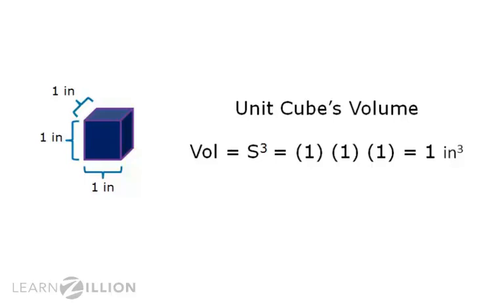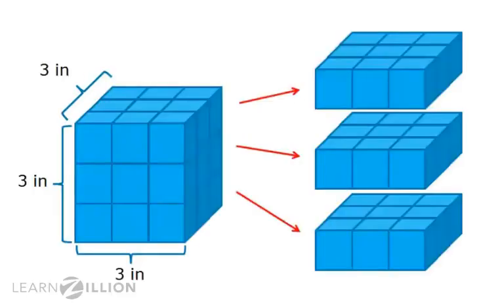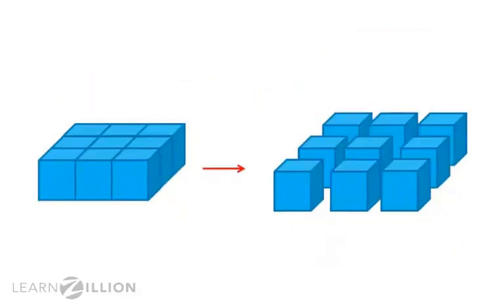Now that I know the volume of one little unit cube, I need to figure out how many little cubes make up the blue larger cube. And I see right here that this cube is made up of three separate layers. When I look at one layer, I see that it is made up of nine little cubes.